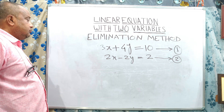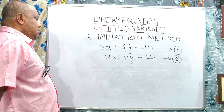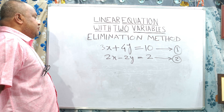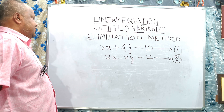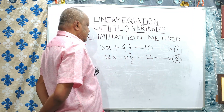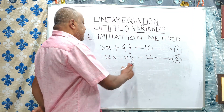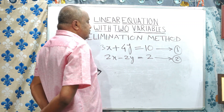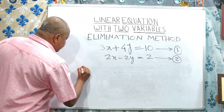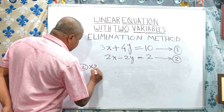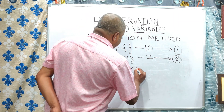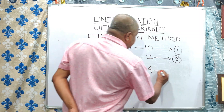Now we will have to look at these two equations and decide what number should be multiplied. In this second question, if we make the coefficient of y the same, we will have to multiply the second equation by 2. No other operation is needed. Multiplying the second equation by 2 gives us 4x minus 4y is equal to 4. This is equation number 3.